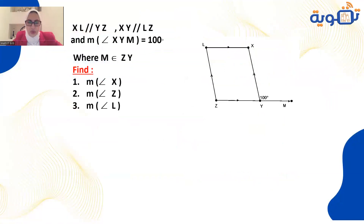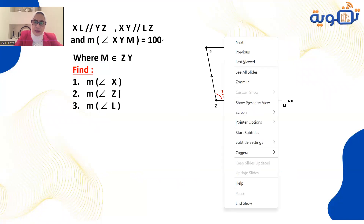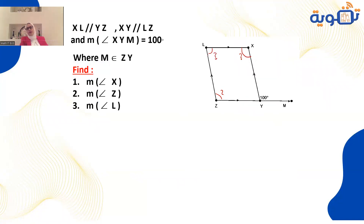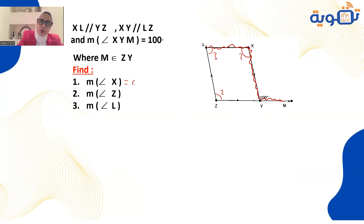Next question: XL is parallel to ZY and XY is parallel to LZ. M belongs to ZY. Find the measurement of angle X. Using alternate angles: angle X equals angle XYM, which equals 100 degrees. Then, angle Z equals angle XYM equals 100 degrees, because they are corresponding angles.